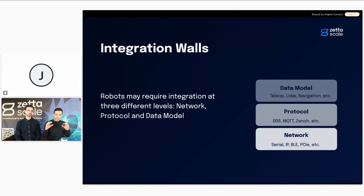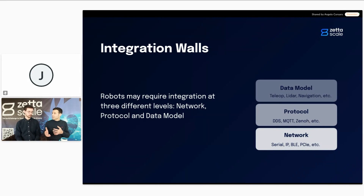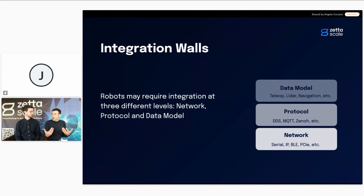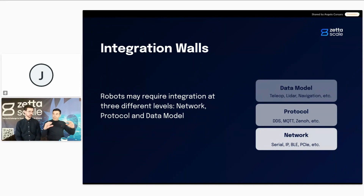At the lowest level, we can have challenges with network connectivity. Not all robots may be equipped with the same kind of physical network — some might have Wi-Fi, others use Thread or other protocols. We've seen this in oceanographic robotics. Even if everything else is the same — the protocol, the data model — if you're not able to share the same network technology, it's very hard to communicate, and that's the most fundamental problem.